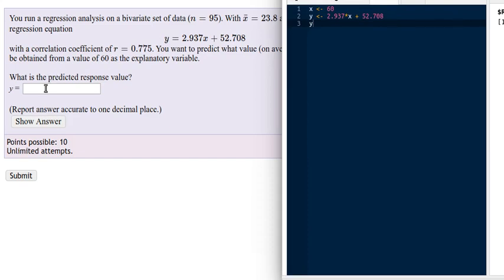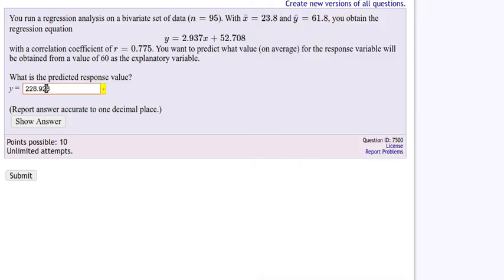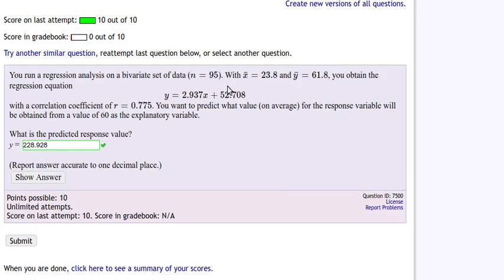Now the reason that was a good idea is because the correlation coefficient was fairly high. The closer to 1 it is, then the better this line is at estimating that value.